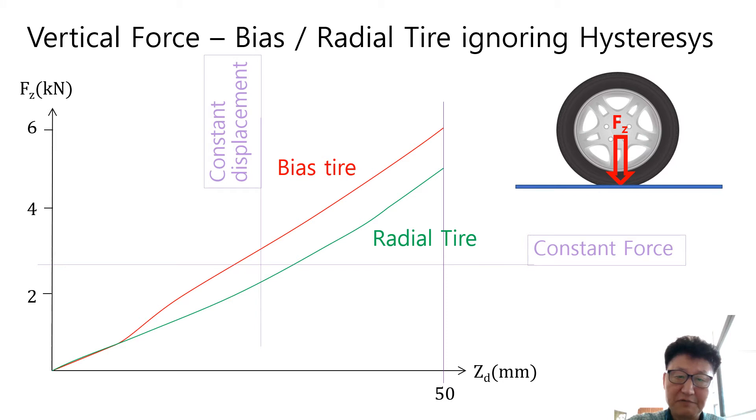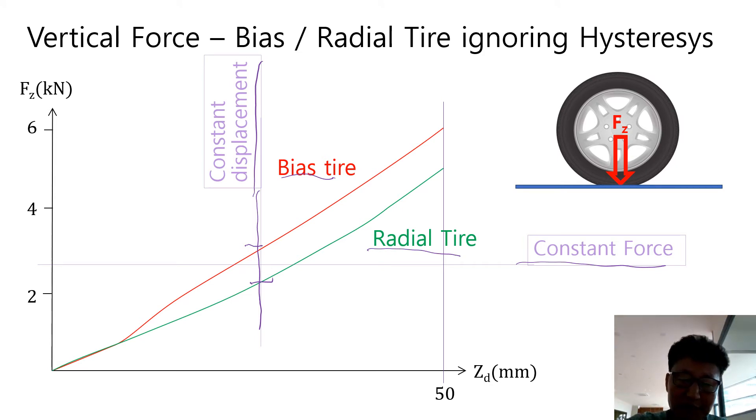This graph shows the characteristics of bias tire and radial tire respectively. You can recognize that radial tire is softer than bias tire if you draw the constant force line or the constant displacement line. The value of radial tire is lower than that of bias tire. This means you have to put more force to the bias tire to have the same displacement as that of radial tire. At the constant force line, you have more displacement in the radial tire than in the bias tire. Therefore, radial tire is softer than bias tire.